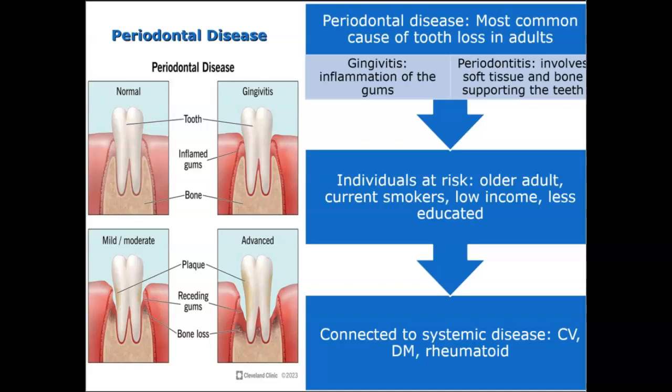The bacteria from periodontal disease may increase your risk as those toxins travel into the bloodstream. These toxins can cause inflammation in your arteries and can create a blockage. These bacteria can also cause respiratory diseases, pneumonia, heart disease, coronary artery disease, strokes, diabetes, and ulcers.